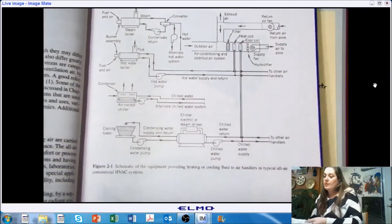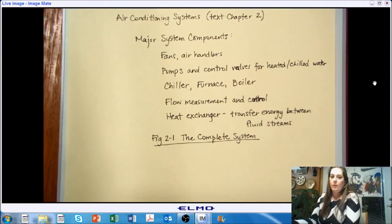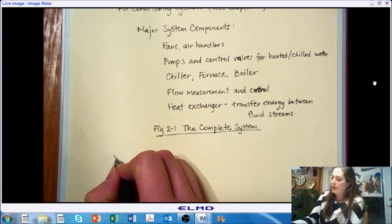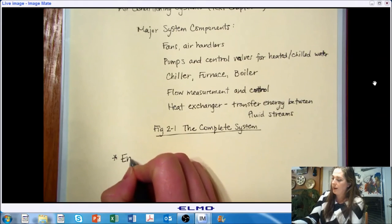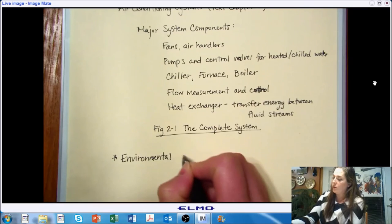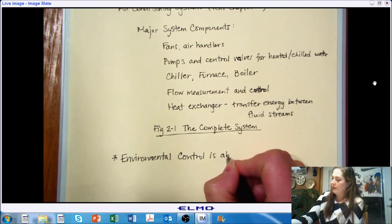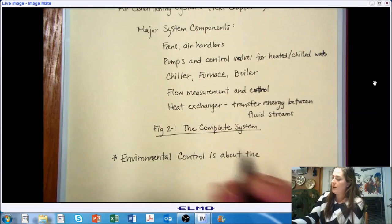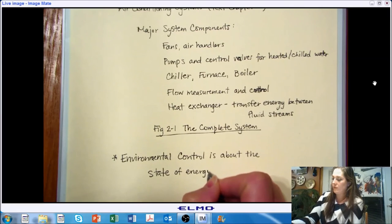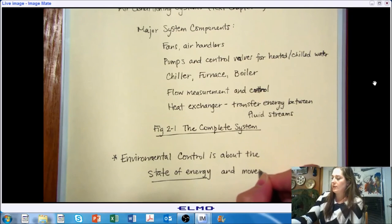So sort of to summarize chapter two and really the message that I want you to take away from this chapter, as we're looking at the components of this system, they are intended to do a specific thing. And let's summarize what's that specific thing and think about why it's important. So environmental control is all about two things. The state of energy is the first and the second, the movement of energy.